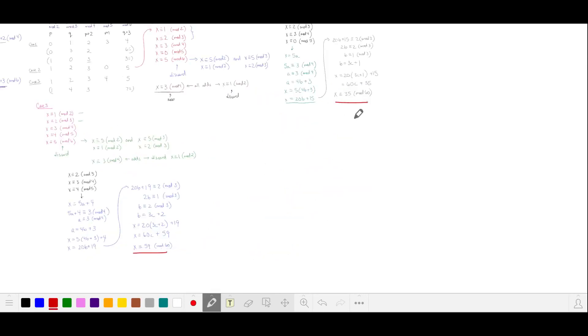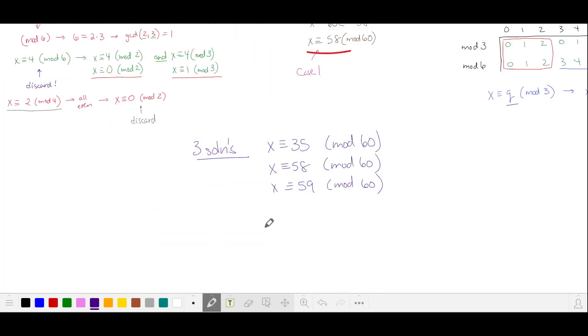Collecting our three solutions for our three cases, we get numbers that are 35, 58, and 59 in mod 60. We're asked to count the number of solutions for all x between one and a thousand. We'll divide a thousand by 60, and we get 16 with a remainder of 40. We're going to get three solutions for each of these 16 multiples of 60. And we'll get one more solution in this remainder, the one that's mod 35.